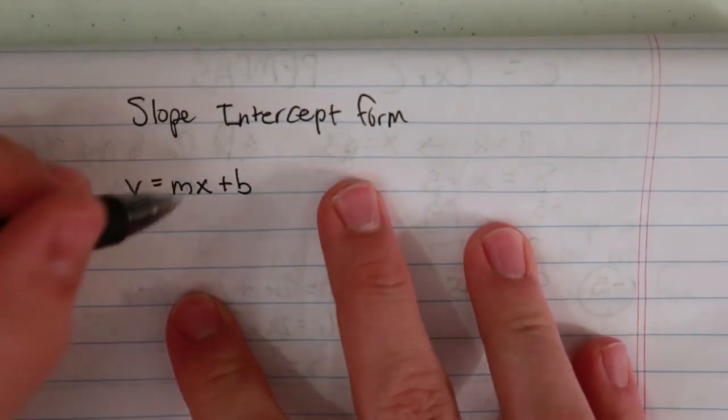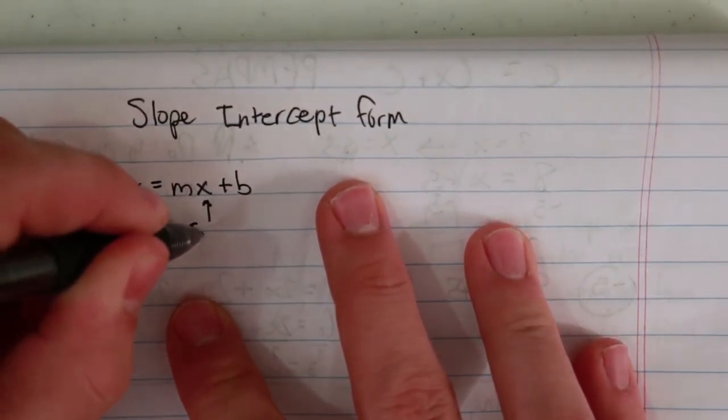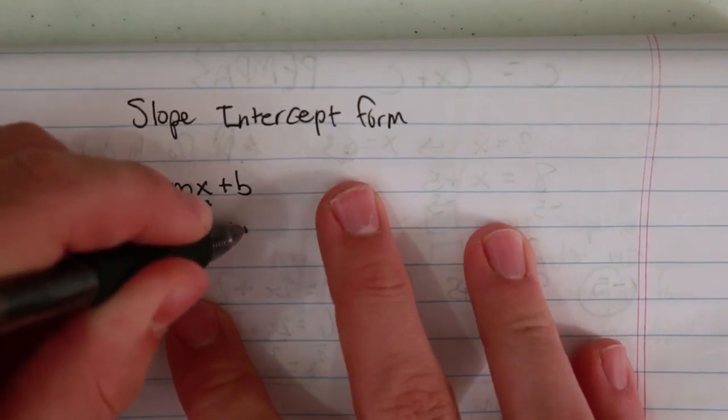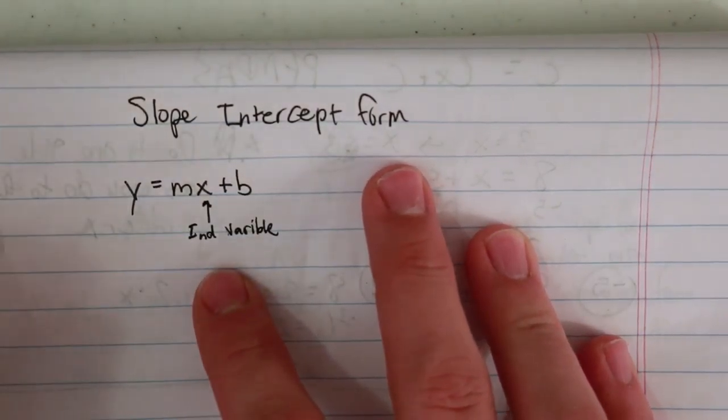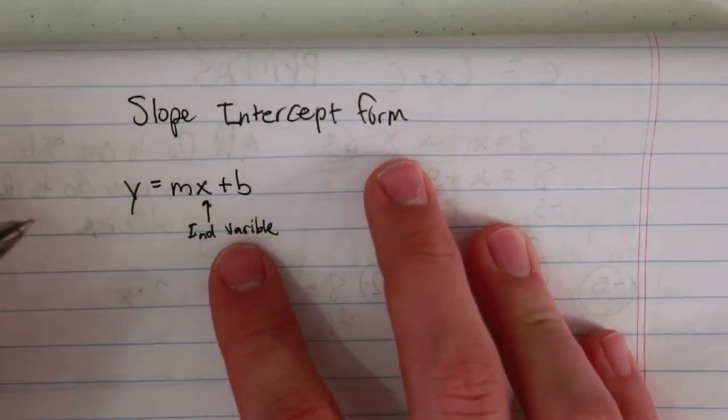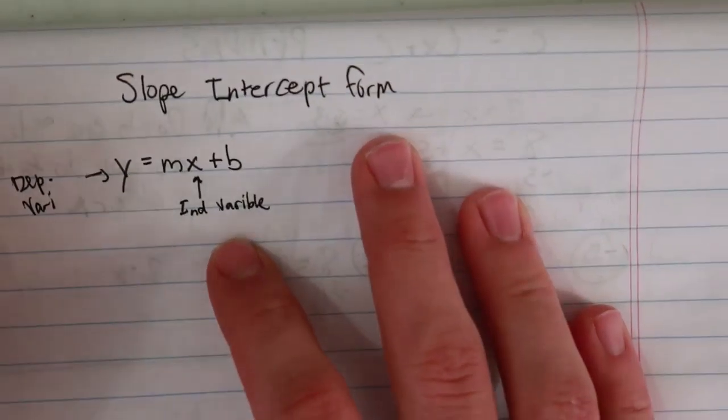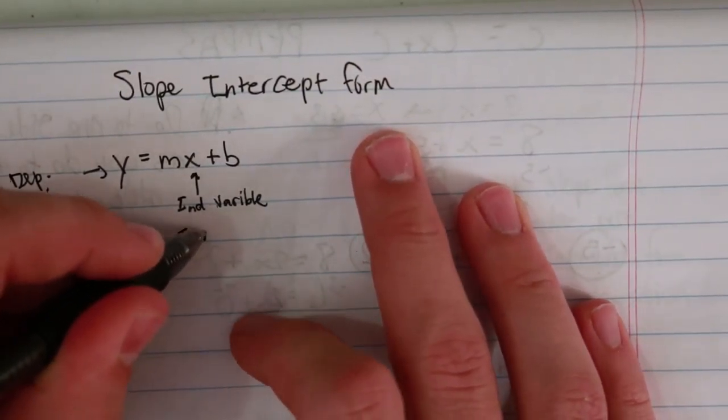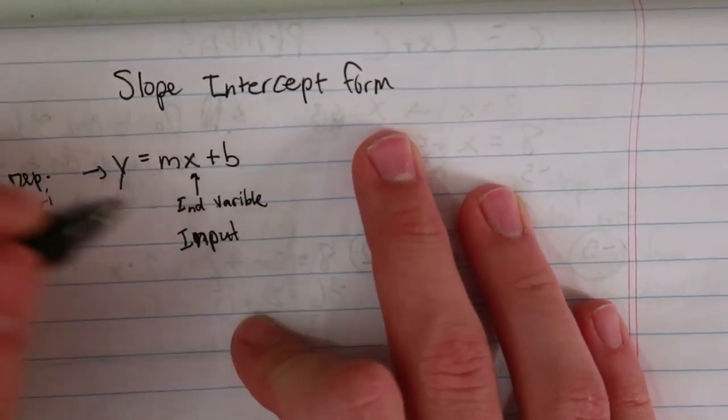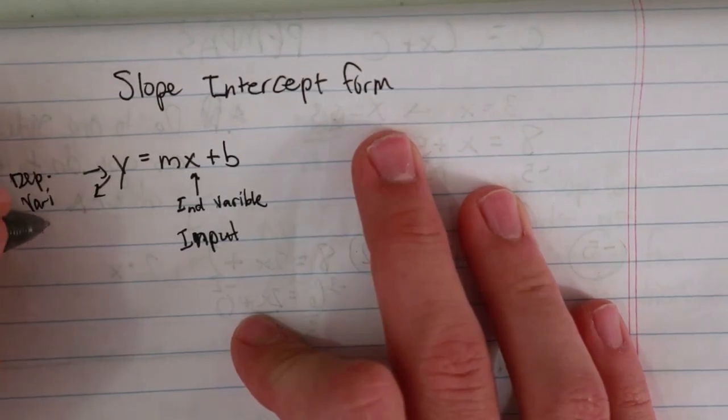So let's start with x. We know x is technically our independent variable, but we're just going to usually leave this as x. Y would be our dependent variable. This could also be our input, and y is the output.